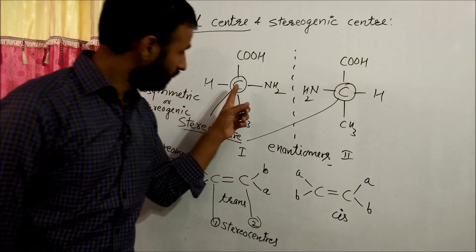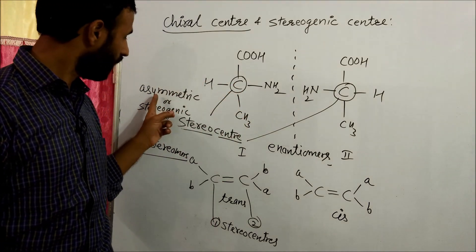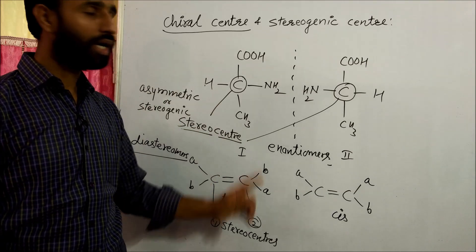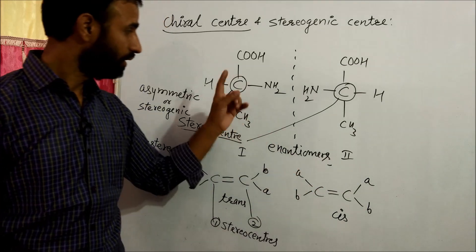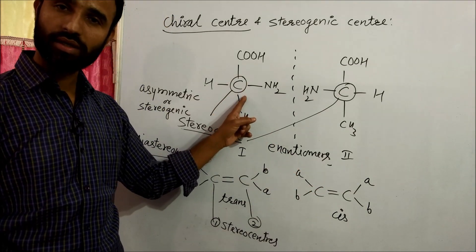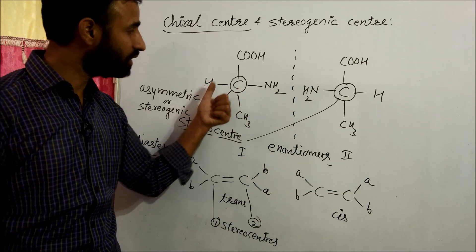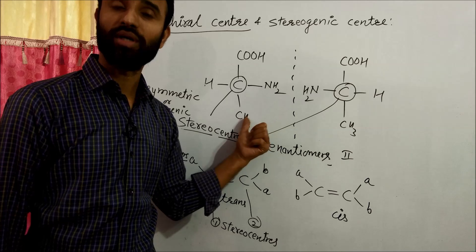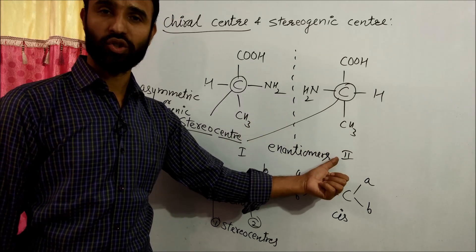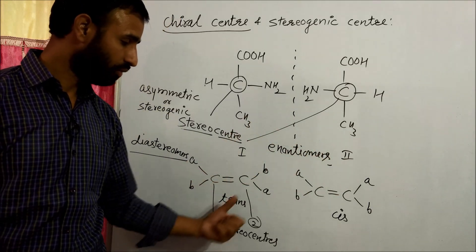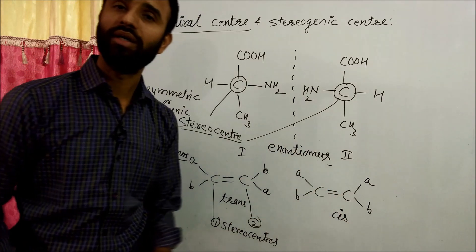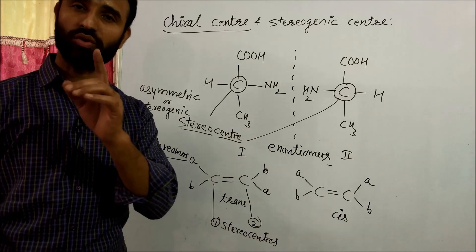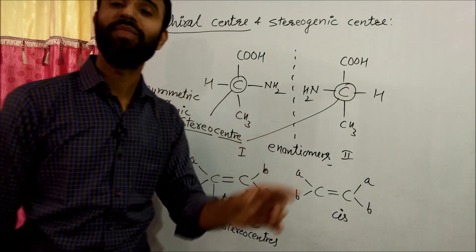Both of these stereocenters are known as stereogenic centers, but they are not chiral centers. This carbon is a chiral center because when we interchange the groups around this carbon, we get an enantiomer. But in the case of the double bond carbons, if we interchange the groups, we get a diastereomer. Such stereocenters are known as stereogenic centers and they are not chiral centers.